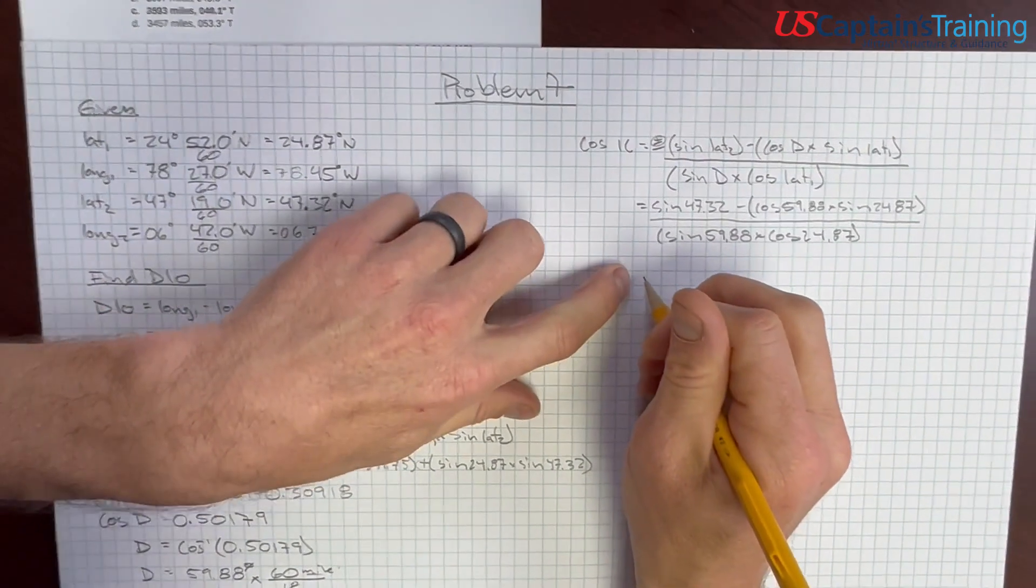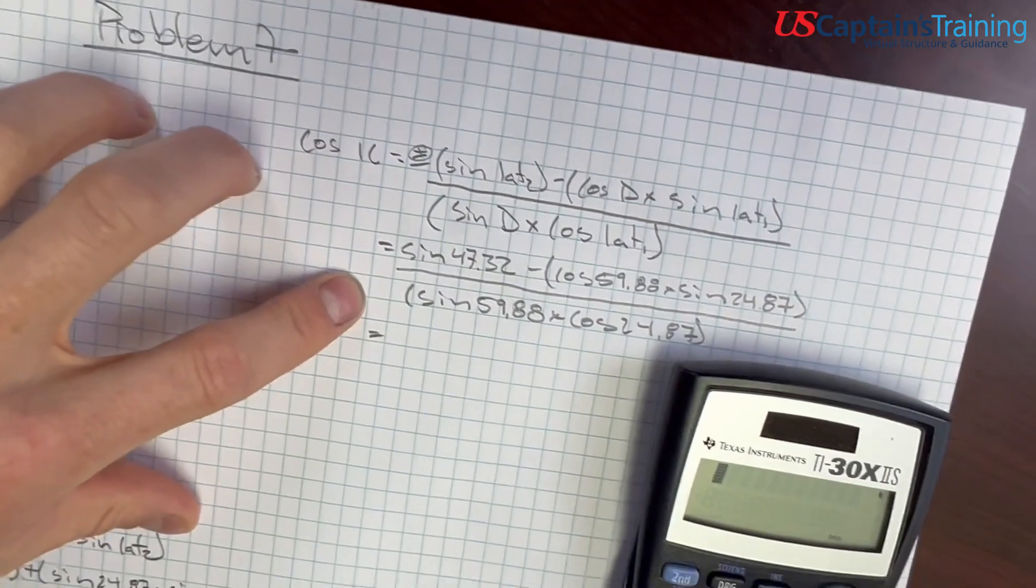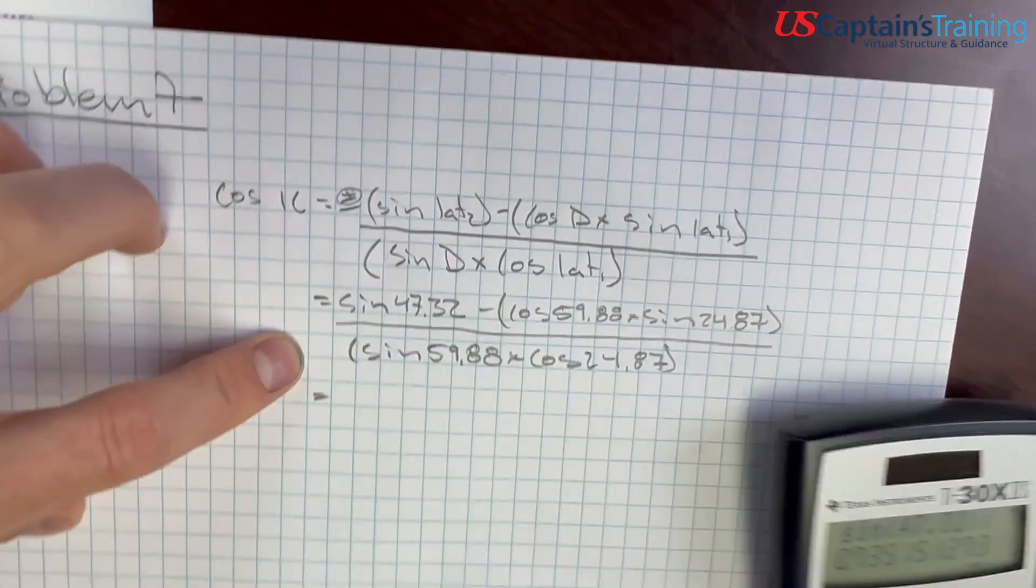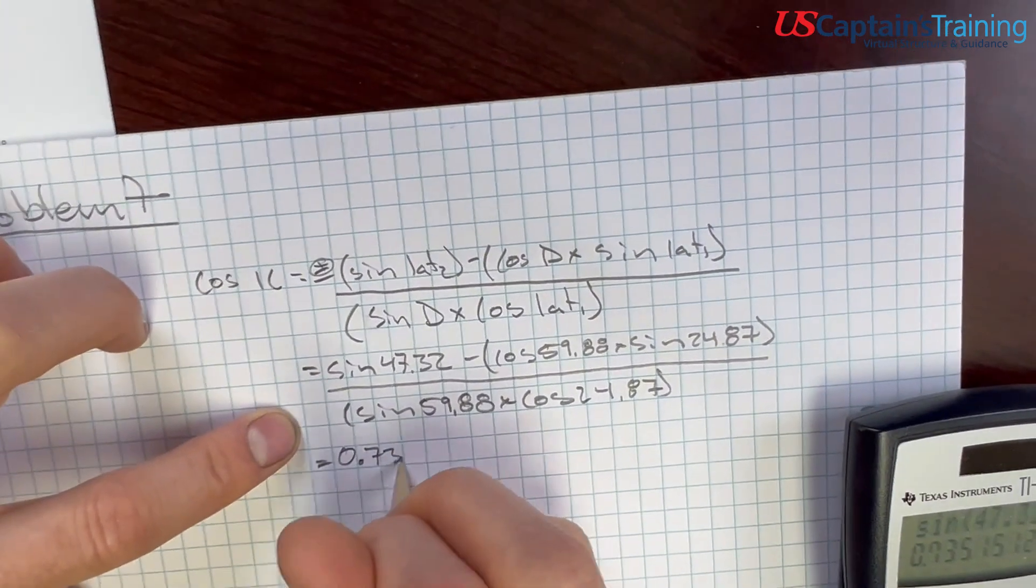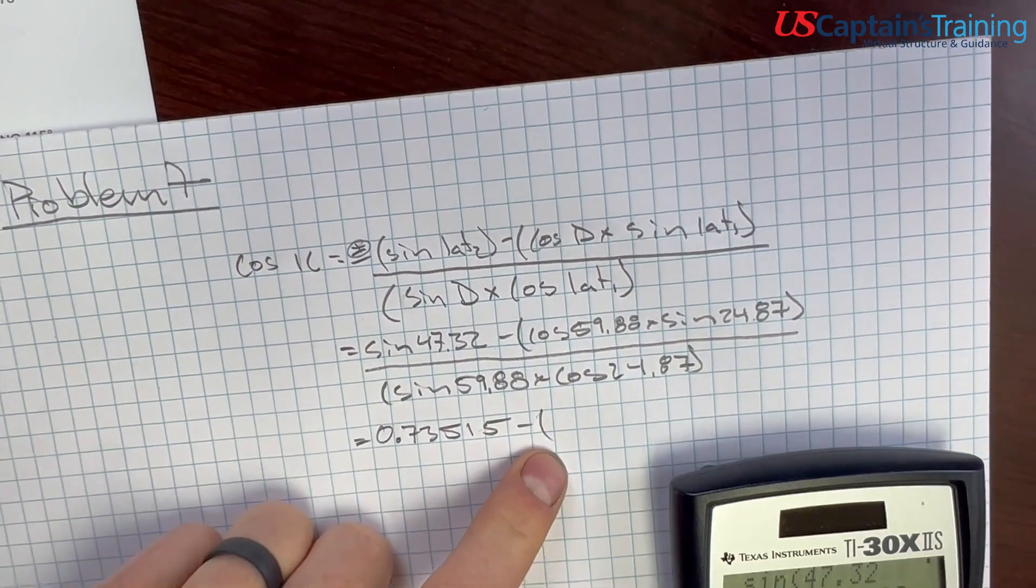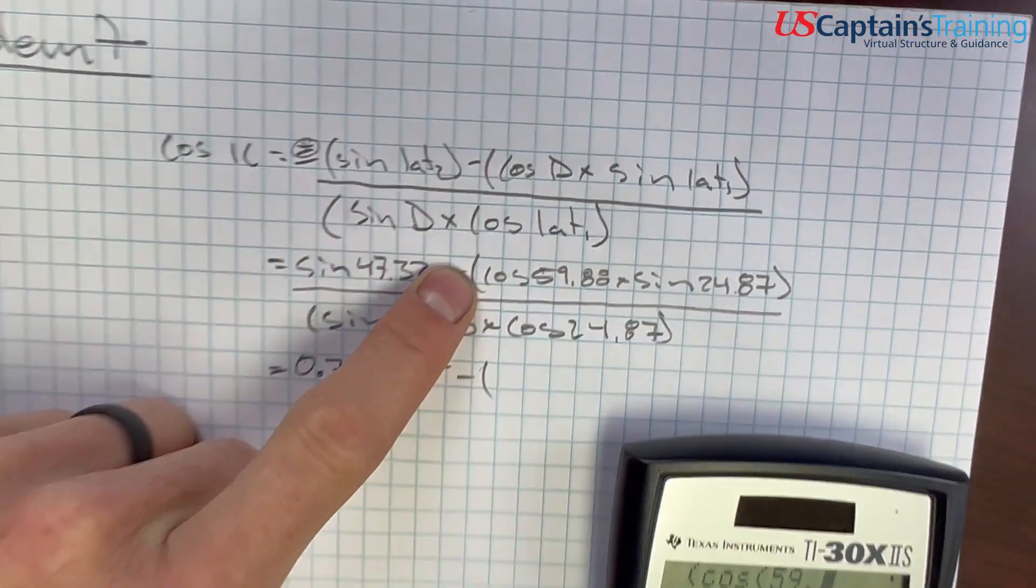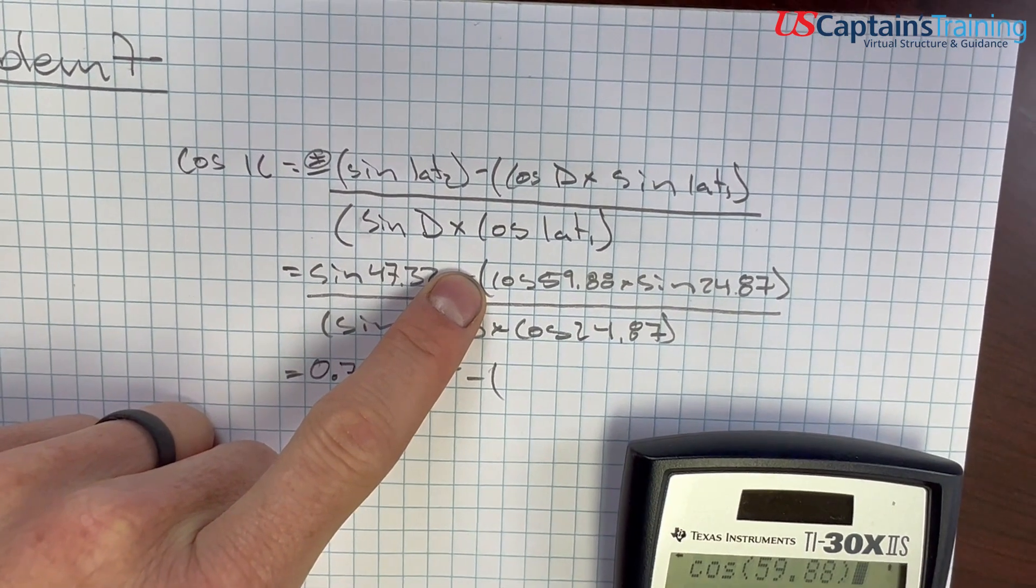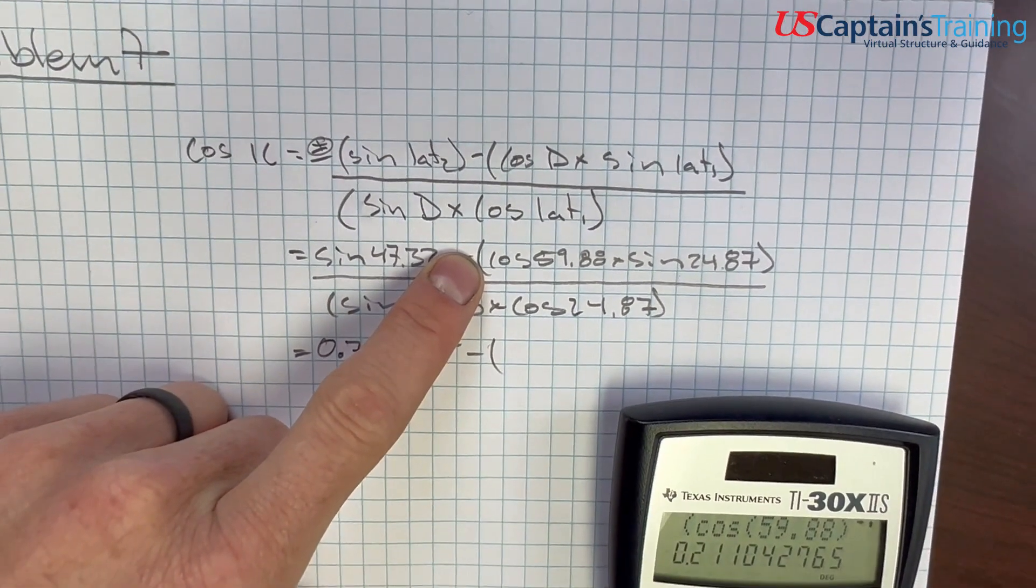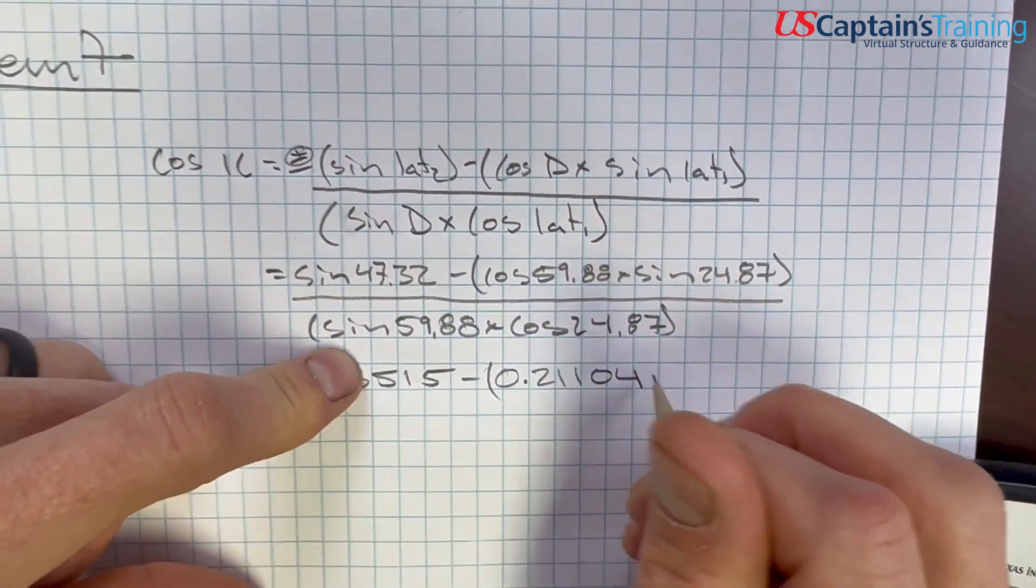Let's start plugging these into the calculator. Sine 47.32 equals 0.73515. Minus cosine 59.88 times sine 24.87 equals 0.21104.